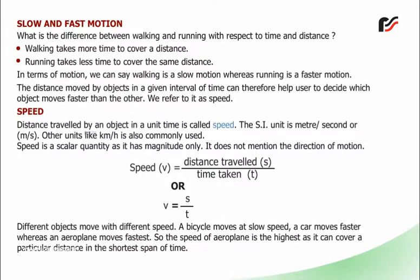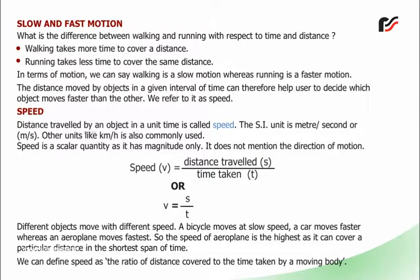Different objects move with different speeds. A bicycle moves at slow speed, a car moves faster, whereas an aeroplane moves fastest. The speed of an aeroplane is the highest as it can cover a particular distance in the shortest span of time. We can define speed as the ratio of distance covered to the time taken by a moving body.